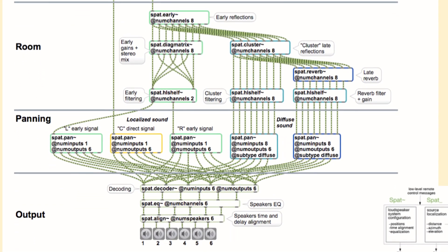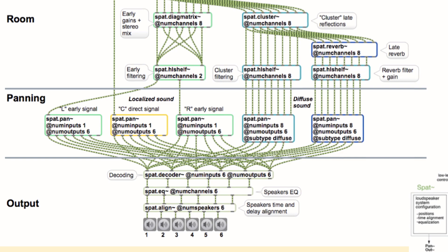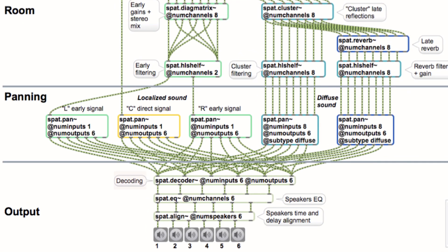The final module is the output module. This module is responsible for decoding or transcoding the processed signals based on the specific playback system. It ensures that the signals are appropriately adjusted for the playback system, including loudspeakers, EQ and delay or gain alignment. This module ensures that the audio signals are optimized for the output medium, whether it's a specific loudspeaker setup or a different audio playback system.